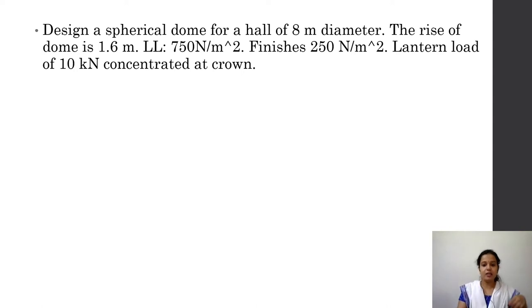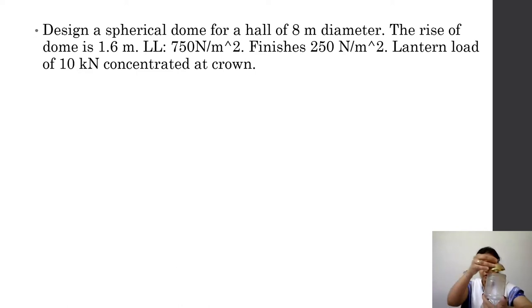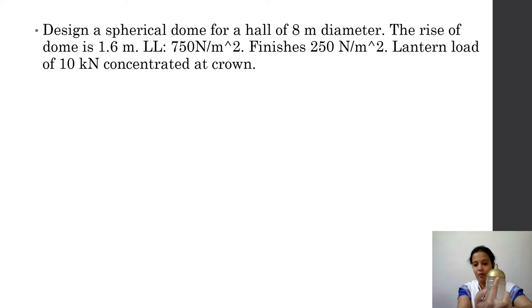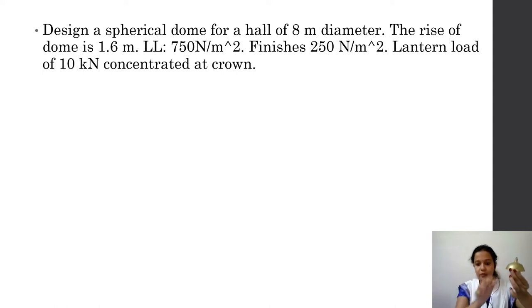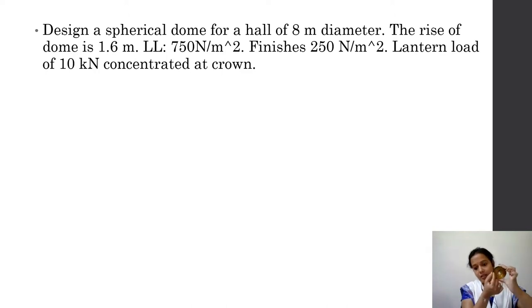Let us consider a cylindrical hall having a diameter of 8 meters. On top of this we have to put a dome. The dome has a rise of 1.6 meter, a diameter of 8 meter, a lantern load of 10 kilo newton concentrated at the crown, and a live load of 750 newton per meter square.